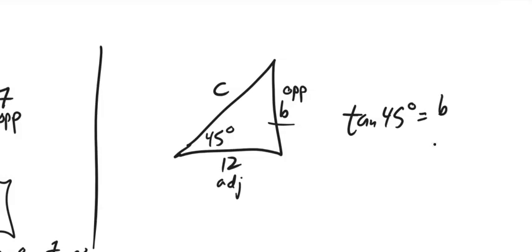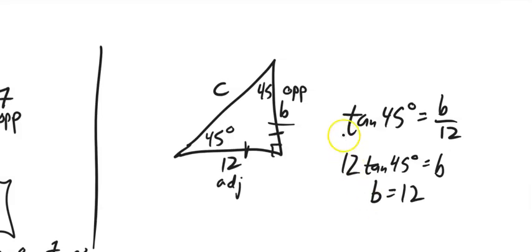TOA is opposite over adjacent. Solve for b, multiply by 12. I know that tangent of 45 is 1. That's nice. So b is 12, which makes sense to me, because if this is a 45-45-90, this side is going to be the same as this side because they're opposite the same angle.